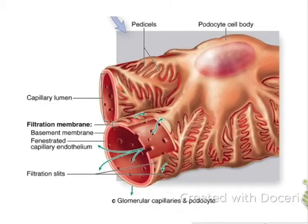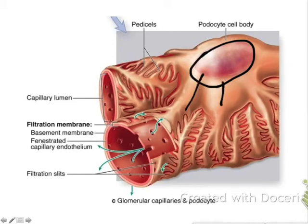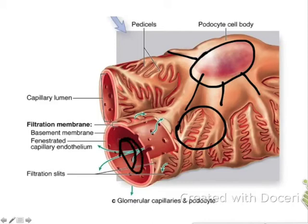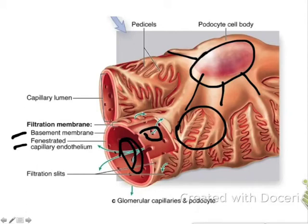Here's a schematic of the podocyte — what I call the spider — with all its legs shooting out in every direction, creating a mixture of feet and filtration slits. If blood is flowing through a capillary, it can exit through one of the fenestrations in the endothelium, then must pass through the basement membrane, and finally travel through one of the filtration slits between the feet of the podocyte. These are the three layers: the fenestrated capillary endothelium, the basement membrane, and the epithelium formed by the pedicles and podocytes.